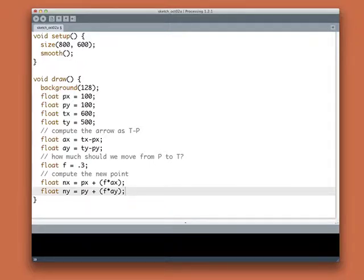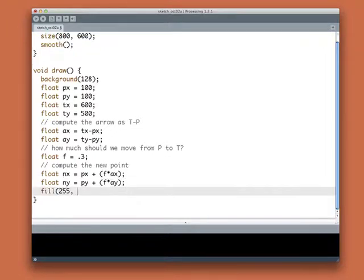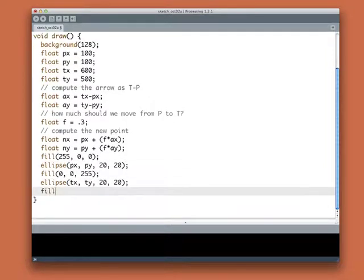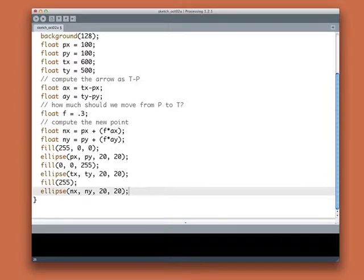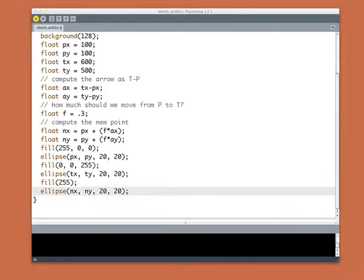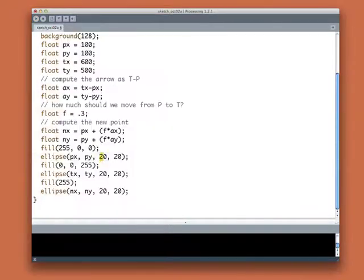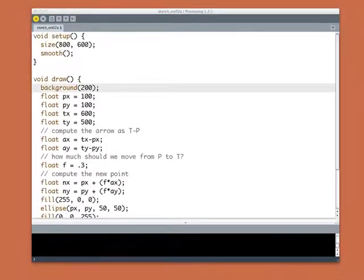So, now I'll just add some normal drawing code so we can see these things. I'll draw the point in red. I'll draw the target in blue. And I'll draw our in-between point in white. So, let's run this and see if, in fact, the white point is a third of the way. And it is. Now, I could make these things bigger. So, why don't we do that? And I'll lighten up the background. There we are.